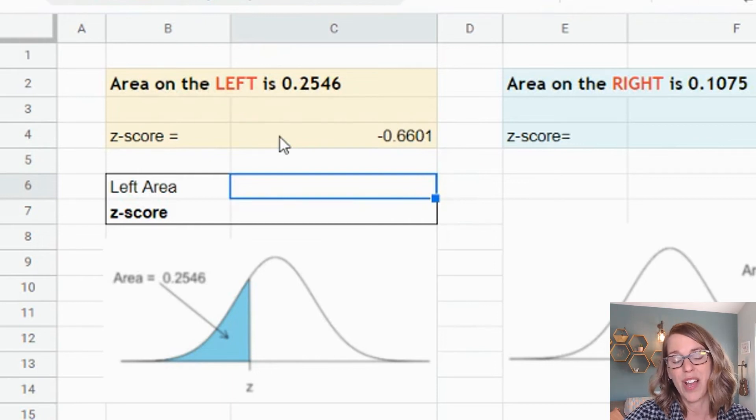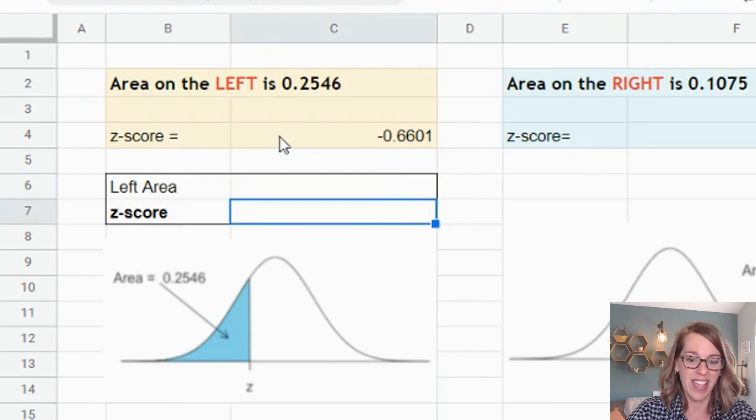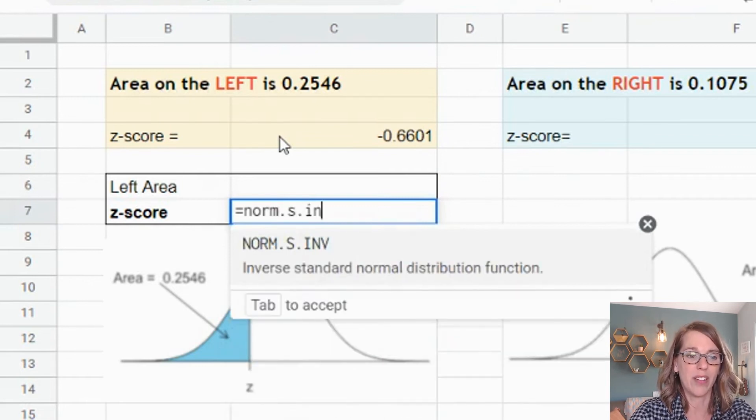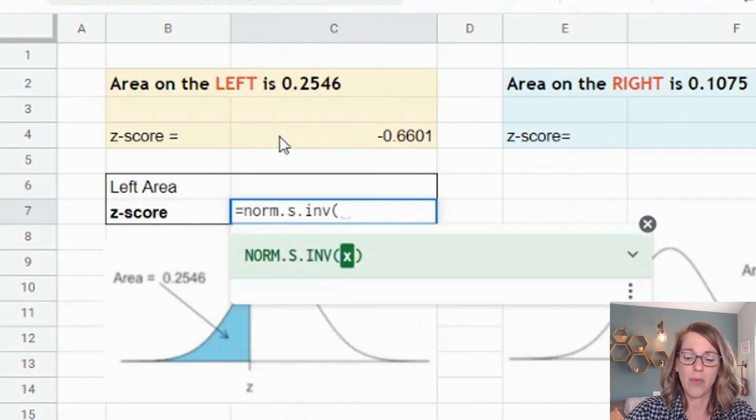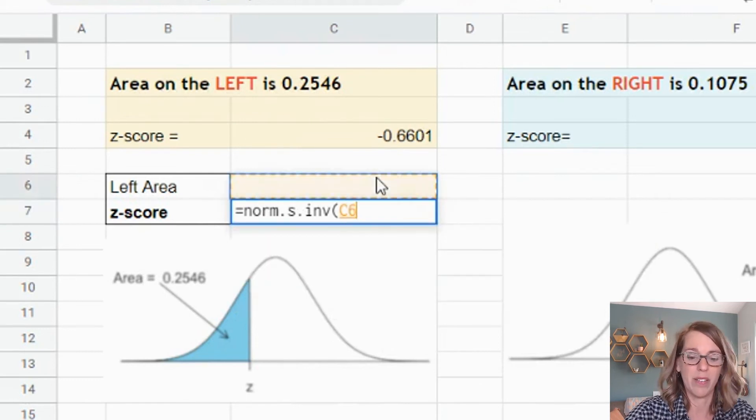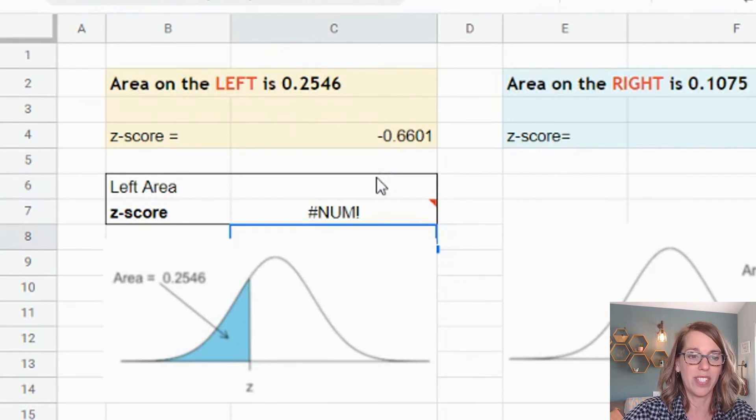Let's turn this into a plug and play so we can put any area in. If I was doing an area to the left, I would do equals NORM.S for the standard normal .INV, and I want the area in the cell above. So I'm going to click on that cell, then parenthesis and enter.